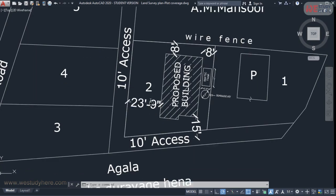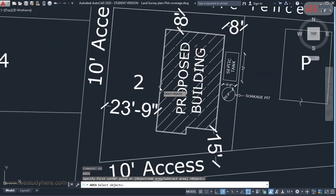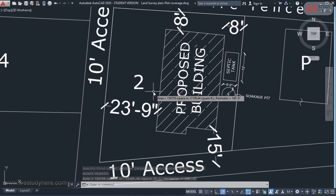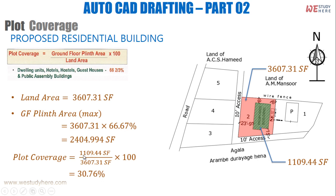Let's check the actual area of the proposed building in the CAD file — that says 1,109.44 square feet. So the plinth area is 1,109.44 square feet. Now, the plot coverage equals plinth area divided by land area multiplied by 100, which gives 30.76%. That means the plinth area covers 30.76% of the land area.